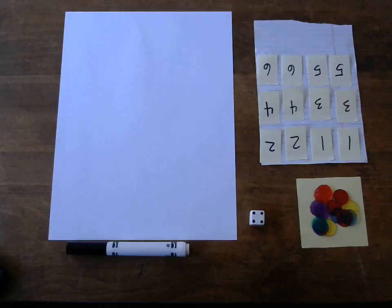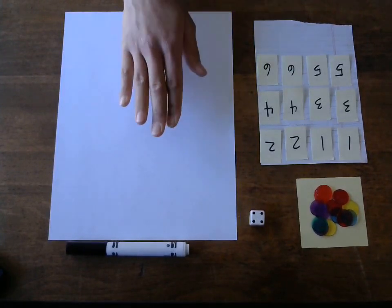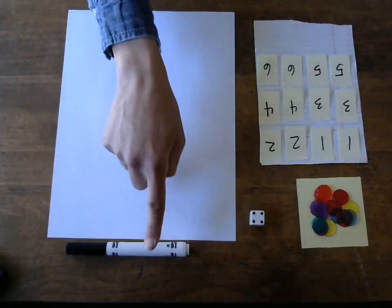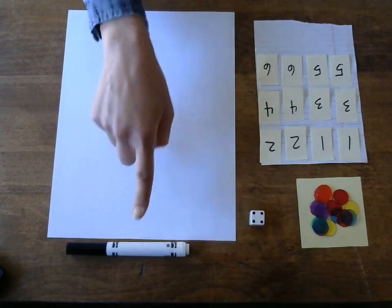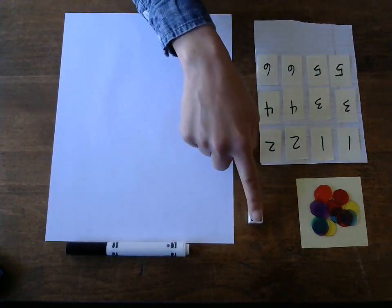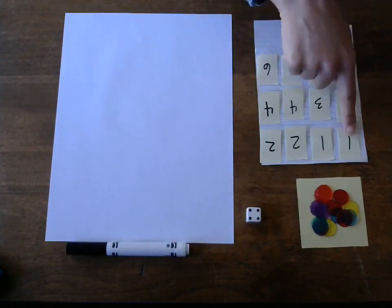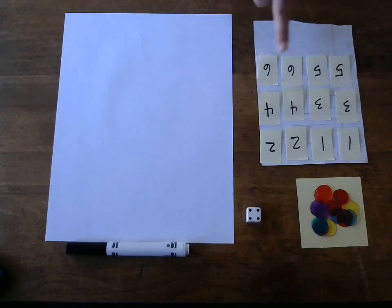All right, that's all important information to know before we play this game. Now let's get started. To play this game, you need a piece of paper, a marker or a pencil or a pen or whatever you have to write with, a dice,